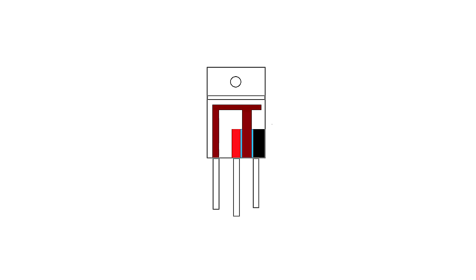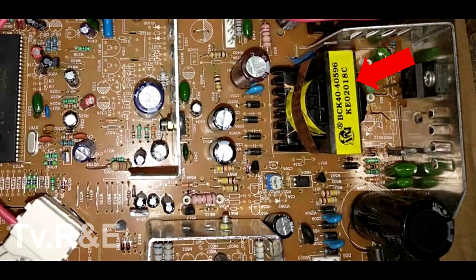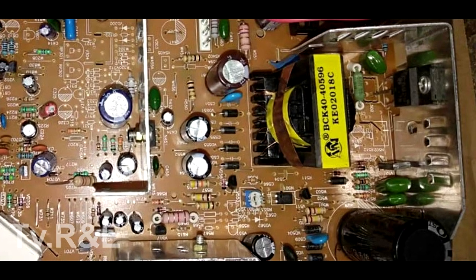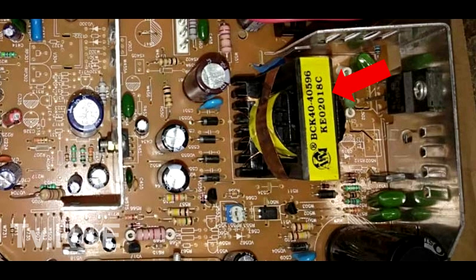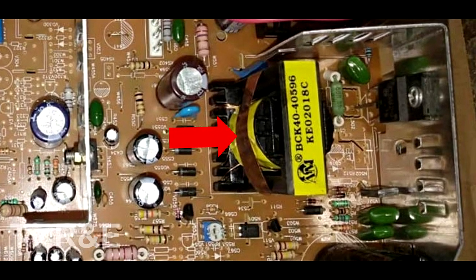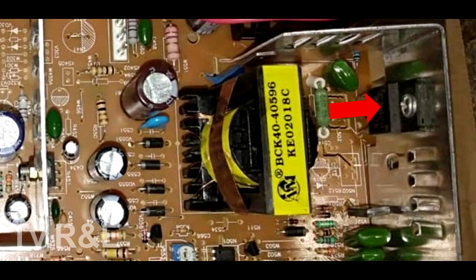ये switching इतना जल्दी होता है जो कि nanosecond में होता है। और इसी switching की वजह से SMPS transformer में एक high frequency electric pulse generate होता है। और इसी high frequency electric pulse से SMPS transformer की secondary winding में electric energy transfer होता है।